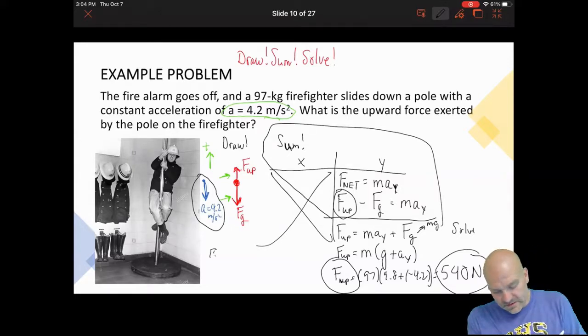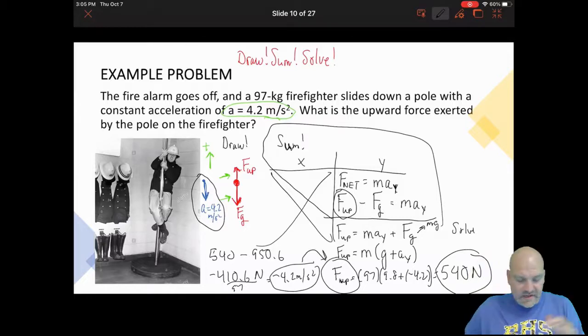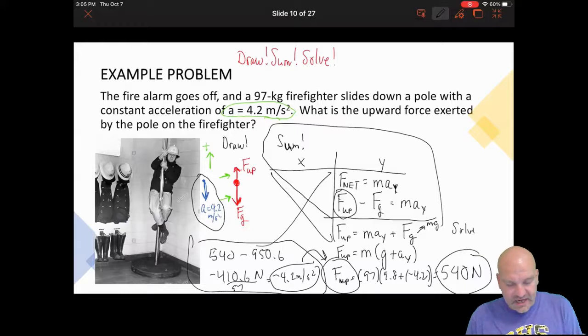So if I were to go and quickly do this, it's a 540 up minus m times g, so 97 times 9.8. 97 times 9.8 gives me 950.6, and it's going to tell me that my net force is going to be negative 410.6 newtons. And if I divide that by 97, because that's the mass of our firefighter, I get my acceleration negative 4.2 meters per second squared. So you see how this all works together. So what I did over here is kind of like checking all my work.